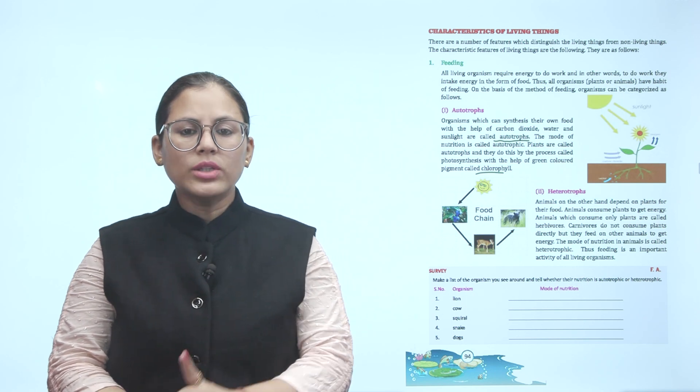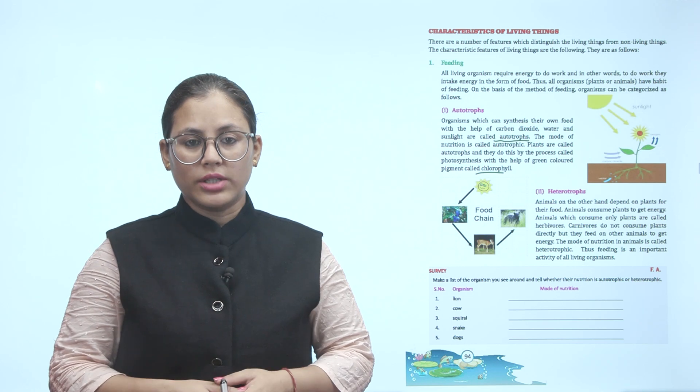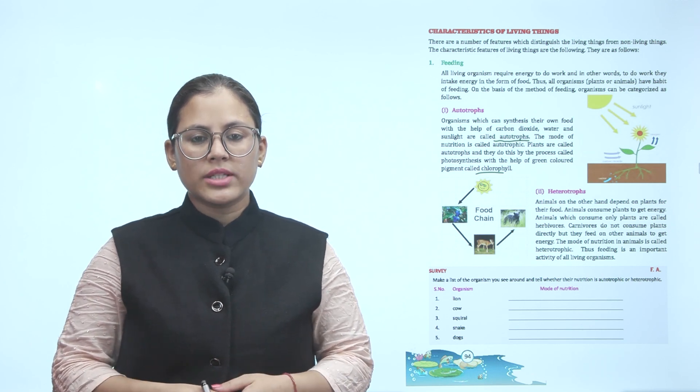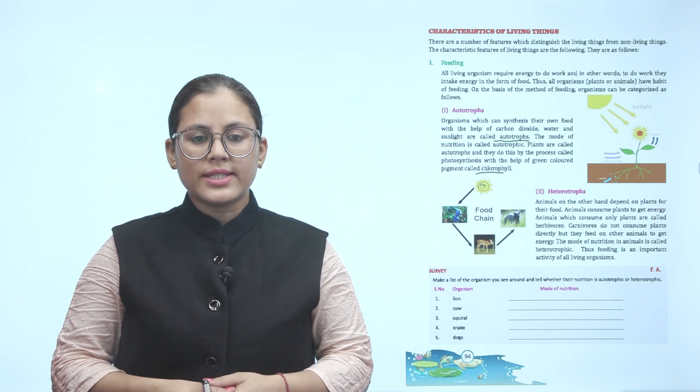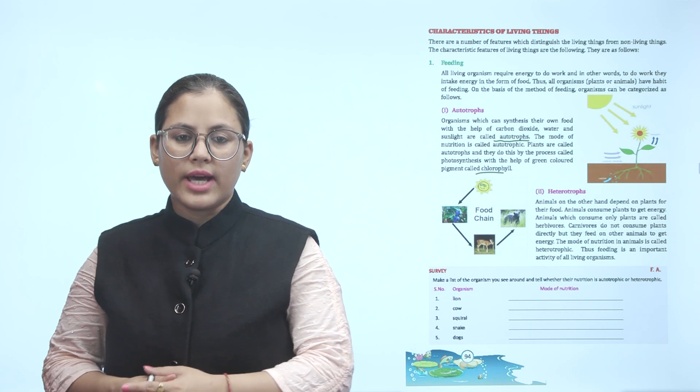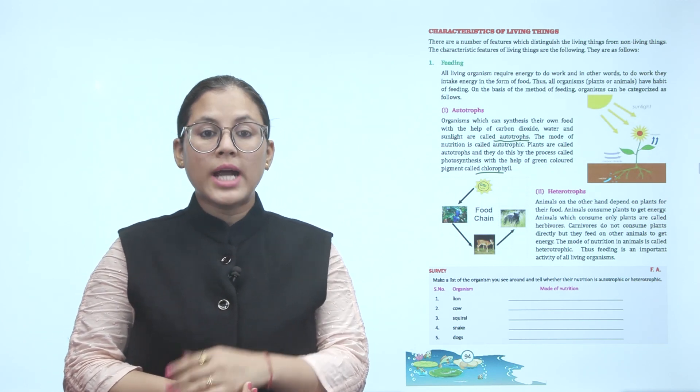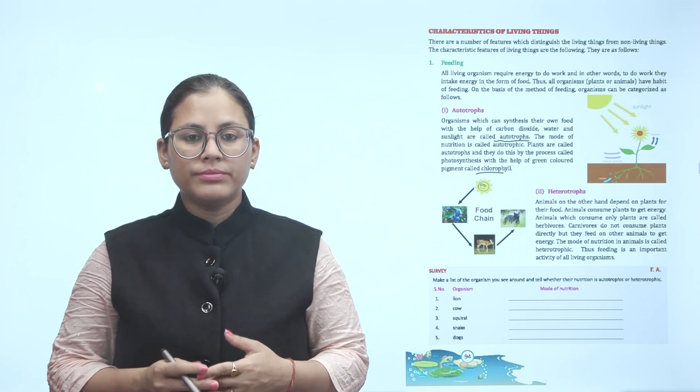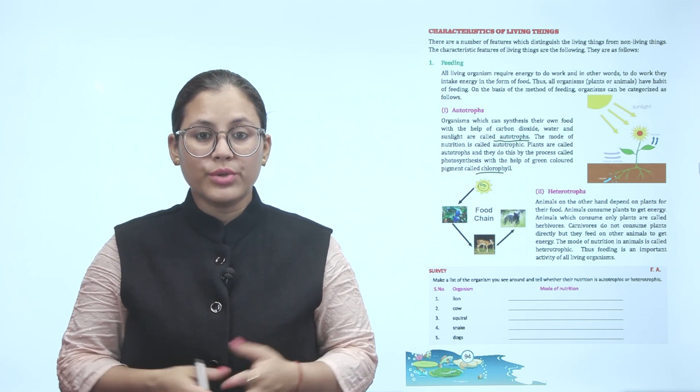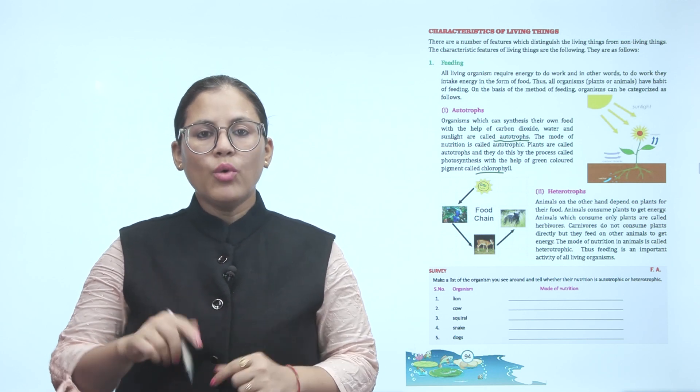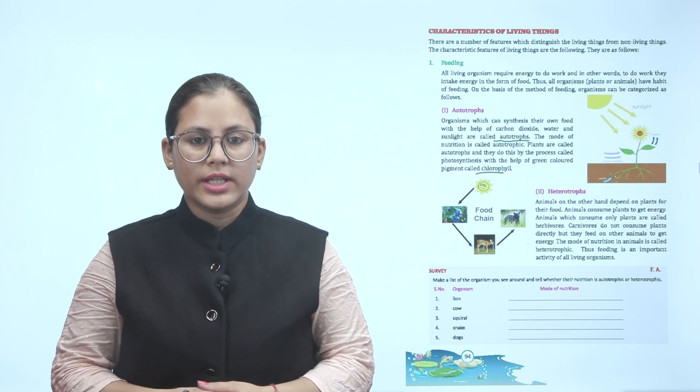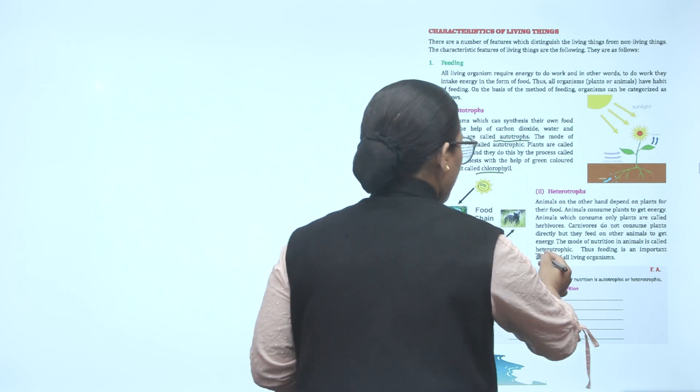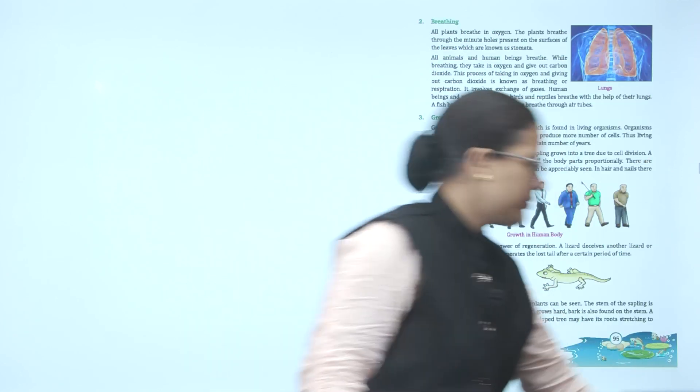Next is heterotrophs. Animals on the other hand depend on plants for their food. Animals consume plants to get energy. Animals which consume only plants are called herbivores. Carnivores do not consume plants directly but they feed on other animals to get energy. The mode of nutrition in animals is called heterotrophic. Thus feeding is an important activity of all living organisms. Animals don't make their own food. They are dependent on plants either directly or indirectly.